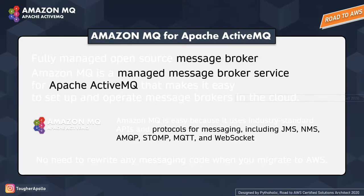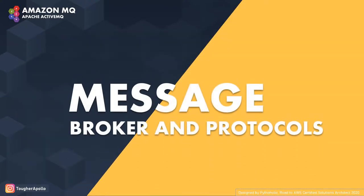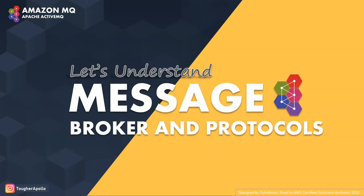The terms that might be new for some of you — I have highlighted them as there might be questions from beginners. What are message brokers or managed message brokers? What is ActiveMQ? What are these protocols including JMS, NMS, AMQP, STOMP, MQTT, and WebSocket? Let's talk about them one by one, starting with message brokers and protocols, then moving on to ActiveMQ. Remember, when I'm talking about ActiveMQ, I'm specifically talking about Apache's ActiveMQ, not Amazon MQ.